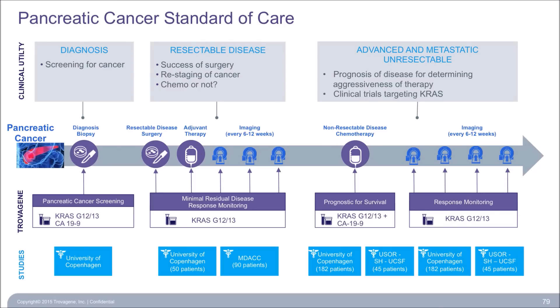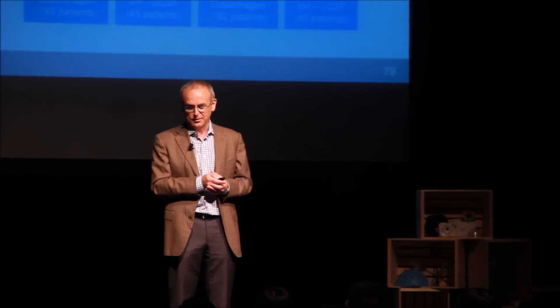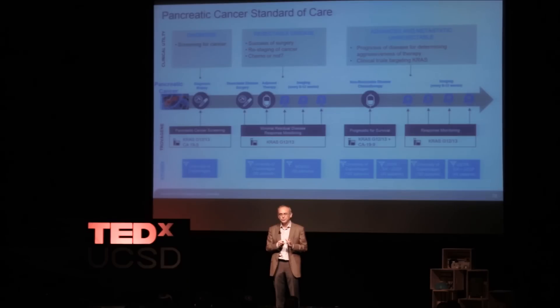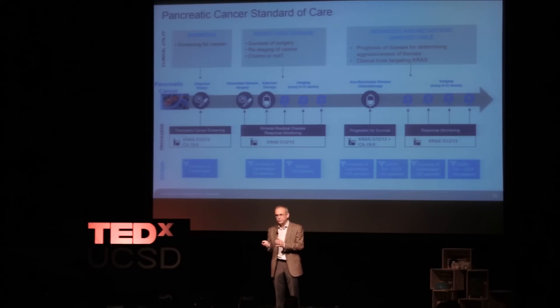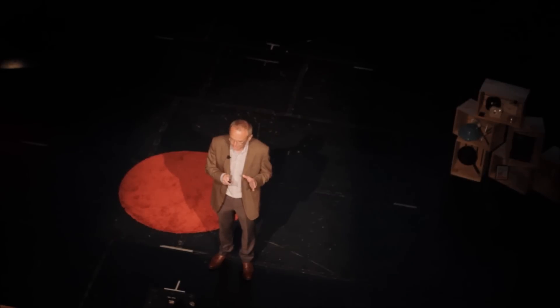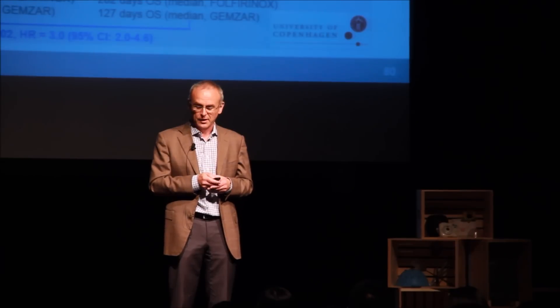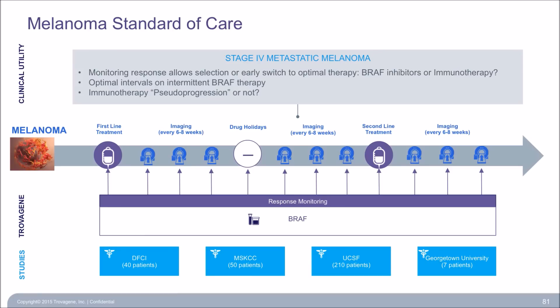This also works in pancreatic cancer, where a lot of clinical work has been done. Pancreatic cancer is notoriously hard to stage — you don't know whether to operate, or whether the patient will respond to chemo. It's a very difficult cancer with very poor prognosis. Without going into too much detail, the urine sample tells you what to do.